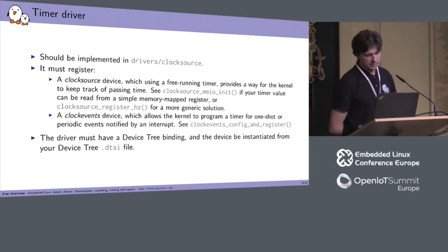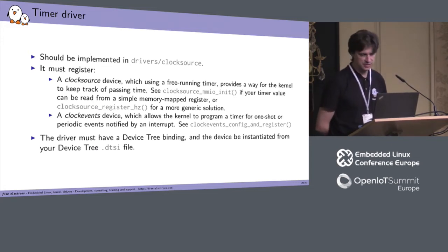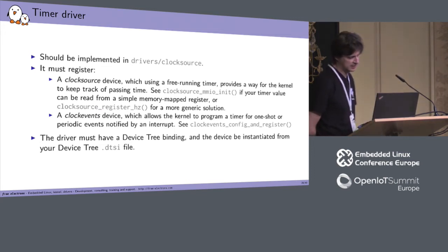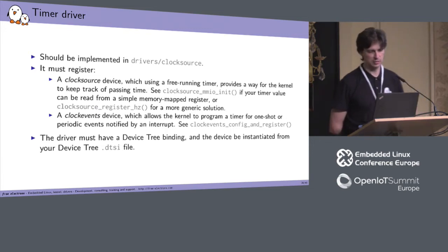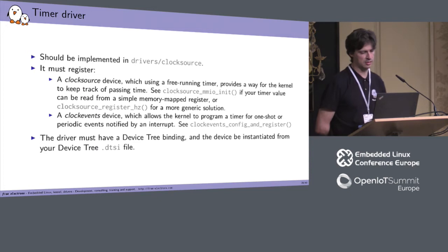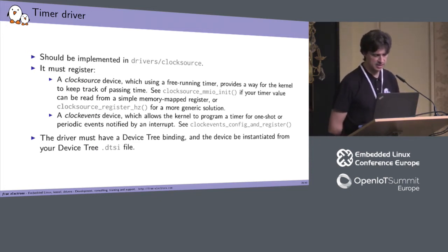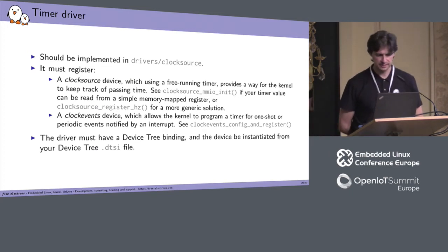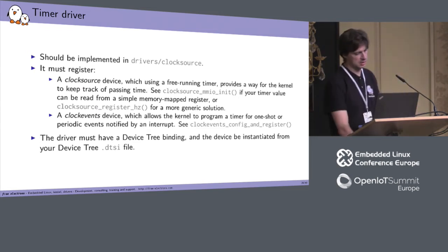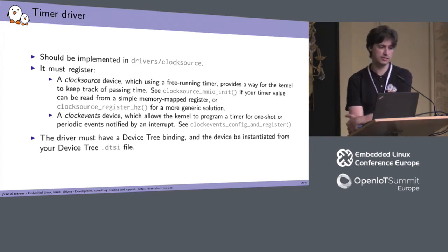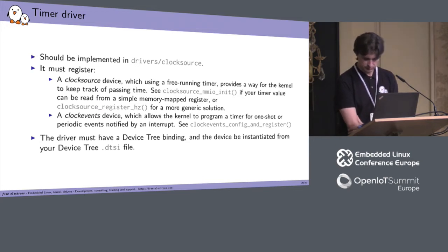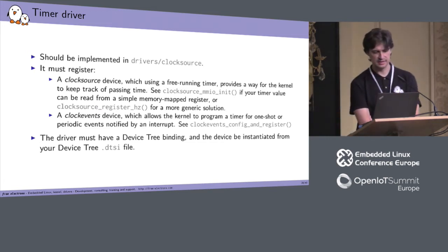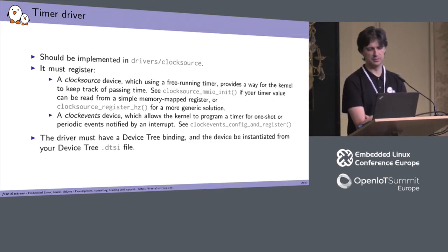For the timer driver, it must be implemented in driver/clocksource. It must register a clock source device using a free-running timer, providing a way for the kernel to keep track of passing time. Depending on what your SoC uses, you can use CLOCKSOURCE_MMIO or a more modular solution which is clocksource_register_hz. You also need to register a clock event device, which allows the kernel to program the timer. You can also program the u-delay — it's better to have it based on the timer than on a loop at boot. For the ARM architecture, it is mandatory to have a device binding, and it must be instantiated in your DTSI.